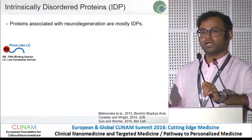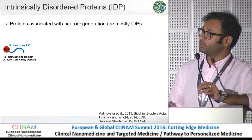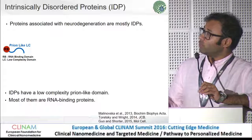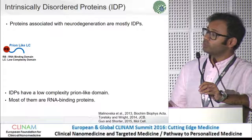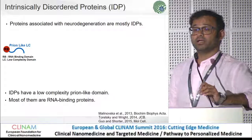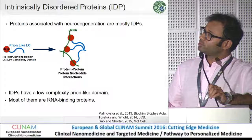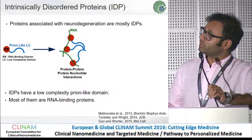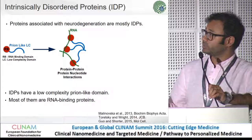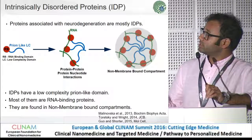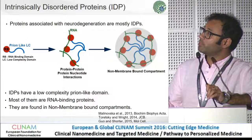If you want to talk about specific proteins, we can have a discussion later, but in the interest of time I'll be skipping some of those terms. What we know about intrinsically disordered proteins is that they have a low-complexity domain, and most of them have a characteristic domain that can bind RNA or single-stranded DNA. This allows these proteins to interact within themselves and with protein-protein or protein-nucleotide interactions. From this literature, we know that these proteins can then localize or form a non-membrane-bound compartment.